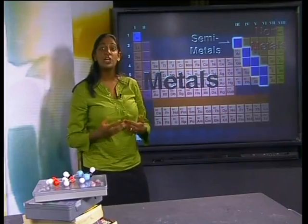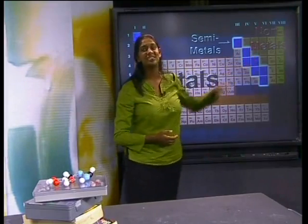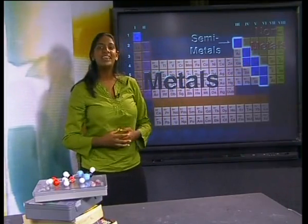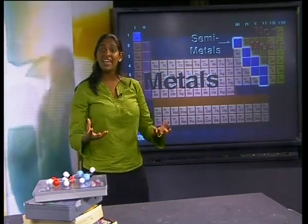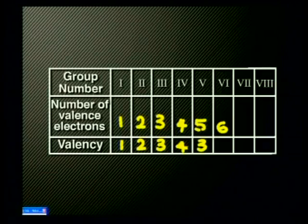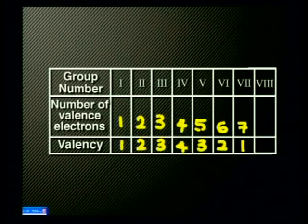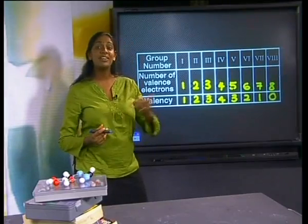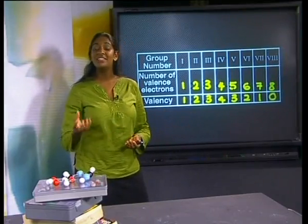The valency of the elements changes as we move over to the non-metals on the right-hand side of the periodic table. Non-metals have higher numbers of valence electrons and will therefore rather accept electrons to fill their outer energy levels. Group 5 has 5 valence electrons but a valency of 3, because it needs 3 more electrons to fill the outer level. Group 6 has 6 valence electrons and a valency of 2. Group 7 has 7 valence electrons and a valency of 1. Group 8, the noble gases, has 8 valence electrons and a valency of 0, because they have a complete outer energy level. So metals will rather give away electrons, and non-metals will rather take on electrons.